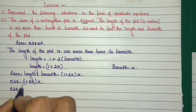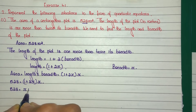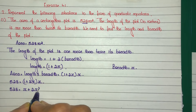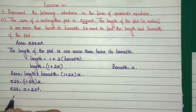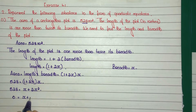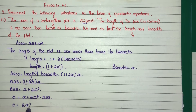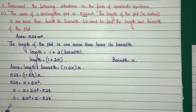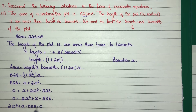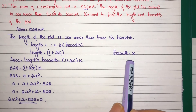Expanding: 528 equals x plus 2x squared. Rearranging to standard form: 0 equals 2x squared plus x minus 528. This gives us the quadratic equation 2x squared plus x minus 528 equals 0, where x is the breadth of the rectangular plot.